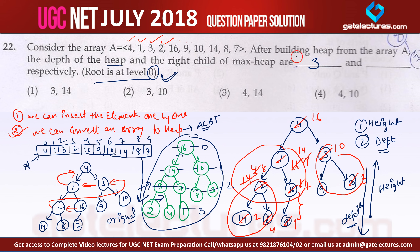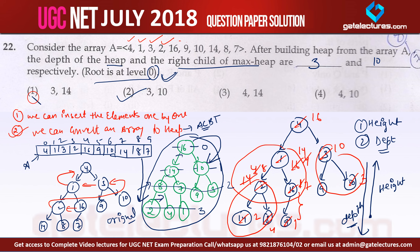They are asking the right child of the max heap root. On the right side of the root we have 10. So the answer is depth 3 and right child 10, which is option number 2. Options with 3 and 4 are wrong. The correct answer is option number 2.